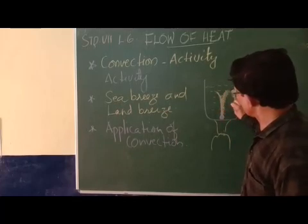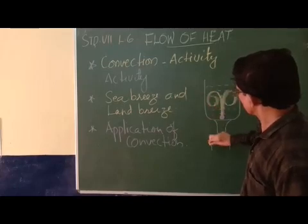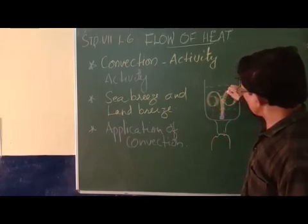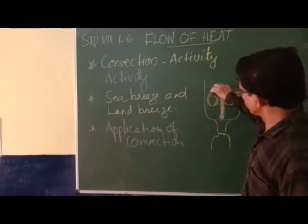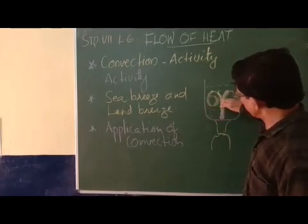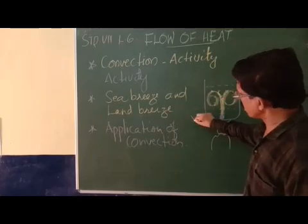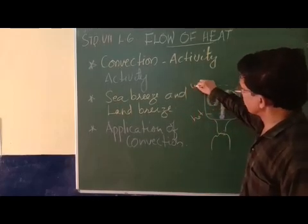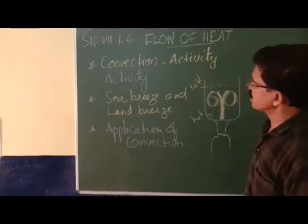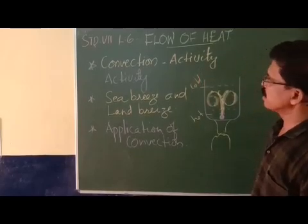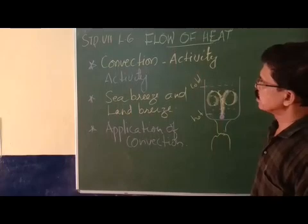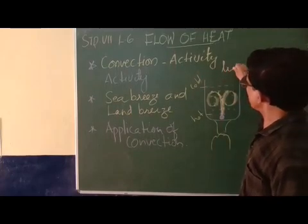It moves like this. The potassium permanganate melts and the water moves from the hot region to the cold region. This is the hot region and this is the cold region. So, what is convection? Convection is the process of transfer of heat from the hot region to the cold region.